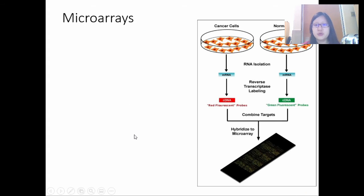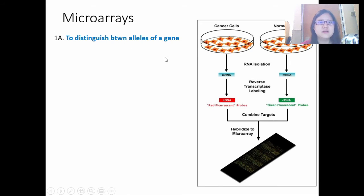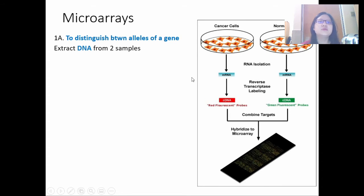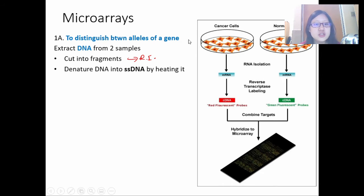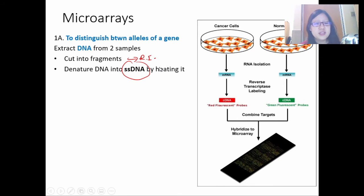Let's go into the procedure. As mentioned, there are two different functions for microarray. For the first — to distinguish alleles of a gene — you obtain DNA. We extract DNA from two samples, individual one and individual two, then cut it into fragments using restriction enzymes. Then we denature the DNA into single-stranded DNA by heating it. Single-stranded DNA is what we want here.